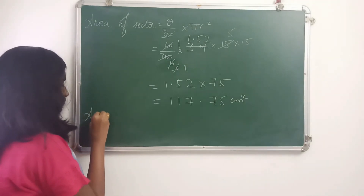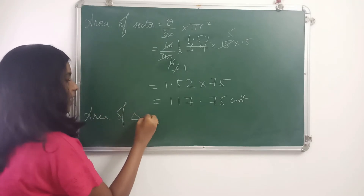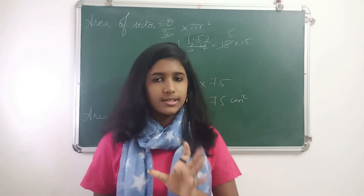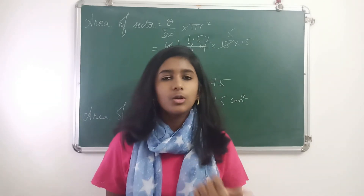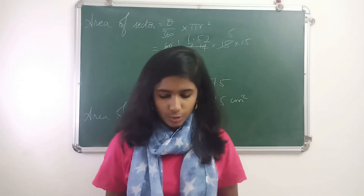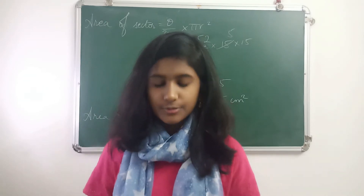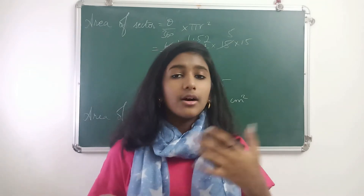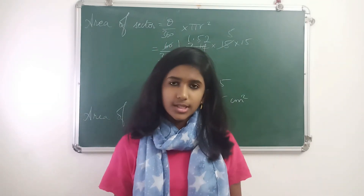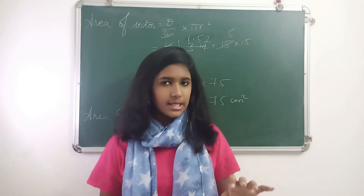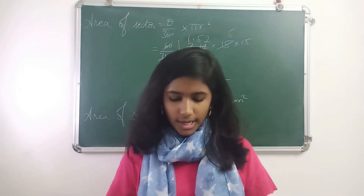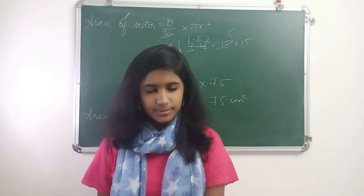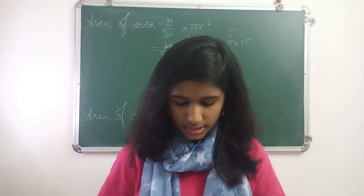Now coming to the area of the triangle. As you notice, one angle of the triangle is given as 60 degrees. Since the two sides are equal — both radii of 15 cm — the angles opposite to the equal sides are also equal, so both base angles are 60 degrees each. This makes it an equilateral triangle with all three angles equal to 60 degrees.